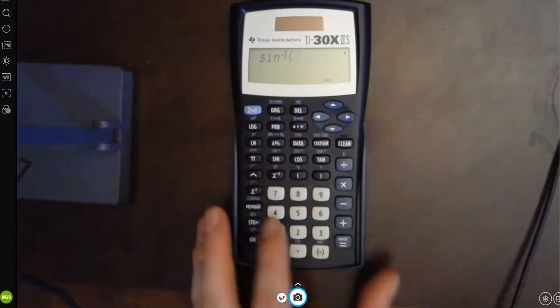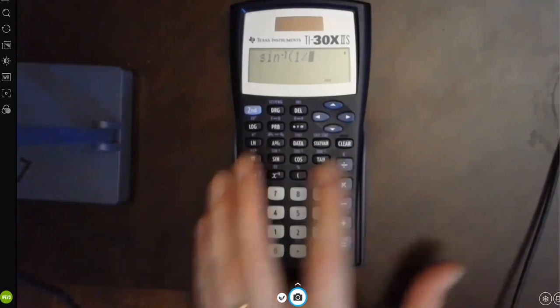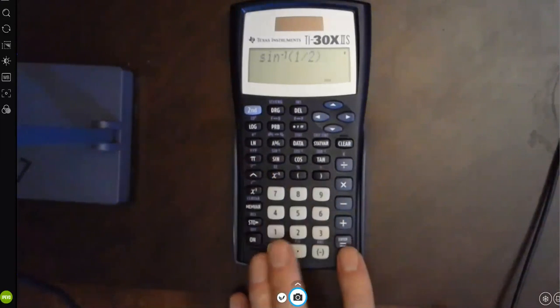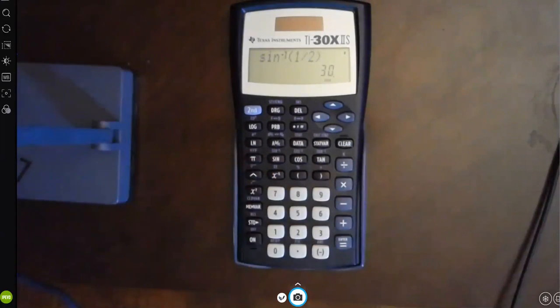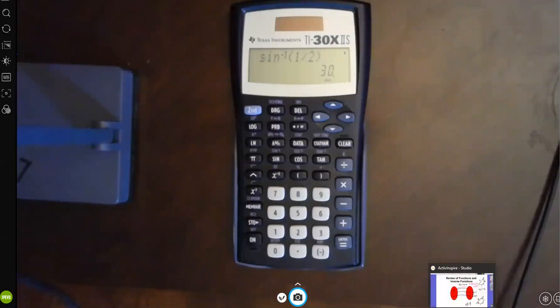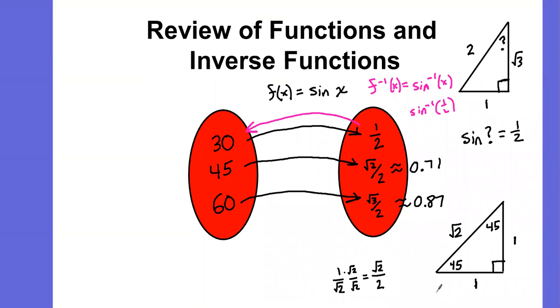I'm going to evaluate this at 1 half. I'm going to do the inverse sine of 1 half, hit equals. There's my answer—there's my 30. So I know that my question mark right here, this angle absolutely has to be 30 degrees.